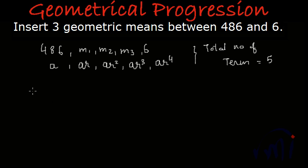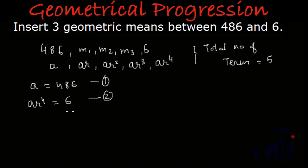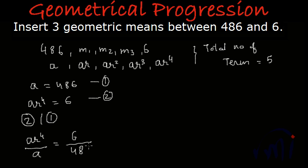Here we have a = 486 as our first equation, and ar⁴ = 6 as our second equation. If we divide the second equation by the first equation, we get ar⁴ divided by a equals 6 divided by 486. The a's cancel, and 6 divided by 486 simplifies — 6 goes into 486 eighty-one times — giving us 1/81.